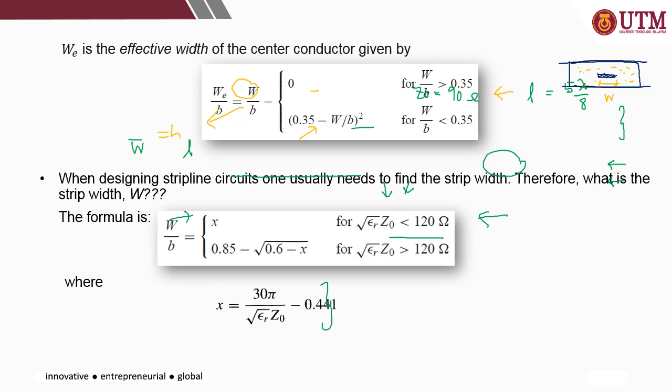If Z0·sqrt(epsilon_r) is less than 120, the ratio W/B will equal X, which can be calculated using that specific equation.